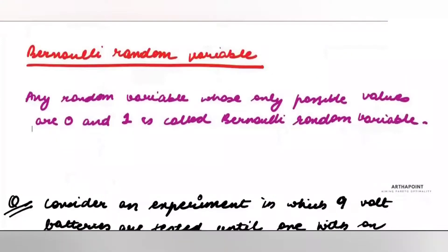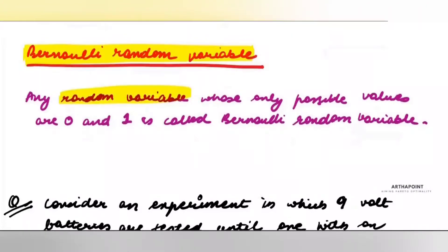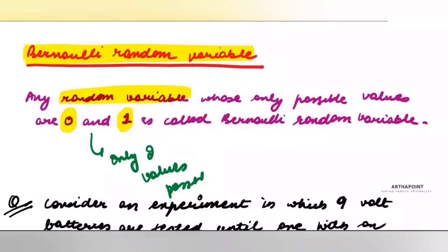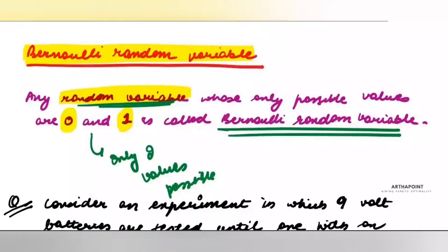Now, based on this, I want to discuss the first kind of random variable and hence the first kind of distribution, which is known as a Bernoulli random variable. What is a Bernoulli random variable? It is any random variable which can take only the value 0 or 1 — meaning only two values are possible. Things like head or tail, success or failure, listed or unlisted — when it can take only two values, that random variable is called a Bernoulli random variable.